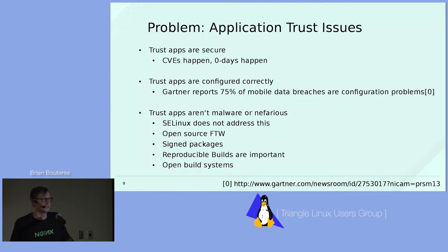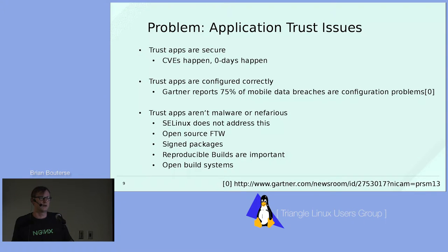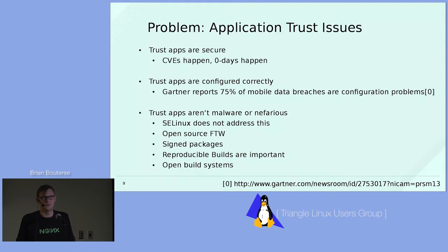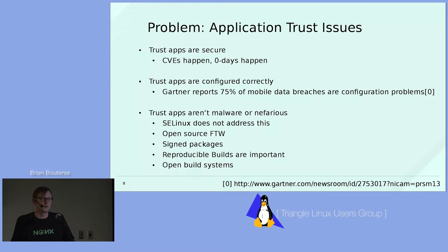There's also a problem of application trust. CVEs happen; zero-days happen. Without SELinux you have to trust that applications are secure and running exactly as the original authors intended. When applications get compromised through CVEs or zero-days, whatever that application can access, a hacker can now access. SELinux is going to come to the rescue. You also need to trust that apps are configured correctly — for instance, a misconfigured PHP.ini that allowed someone to upload a malicious payload and drop into a user shell. These kinds of attack vectors are also stopped in some cases by SELinux.